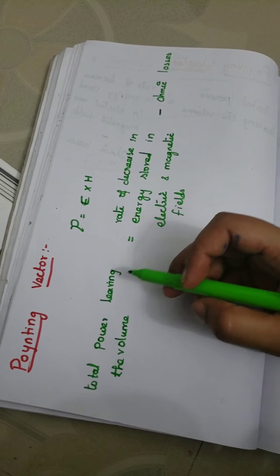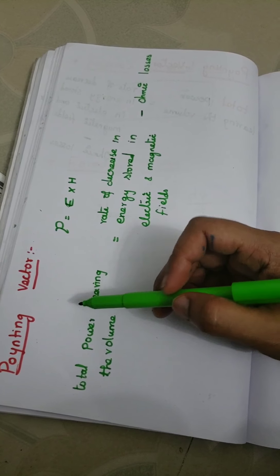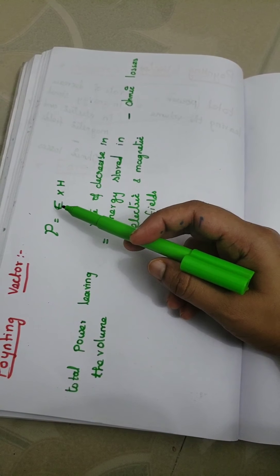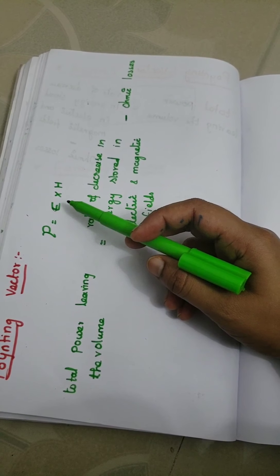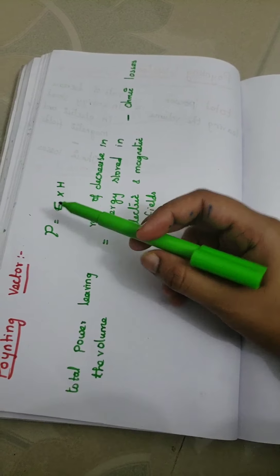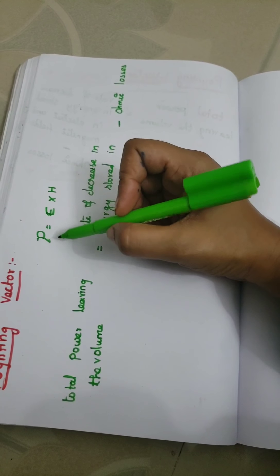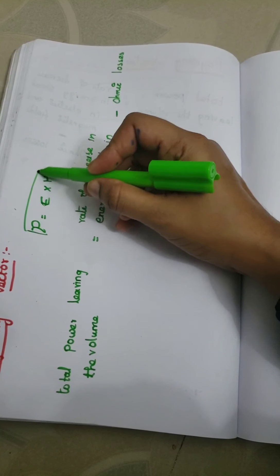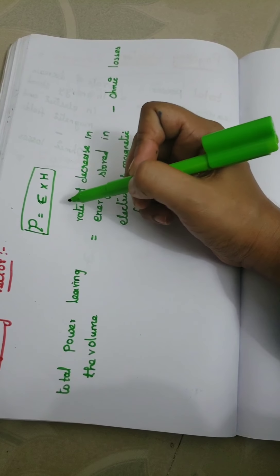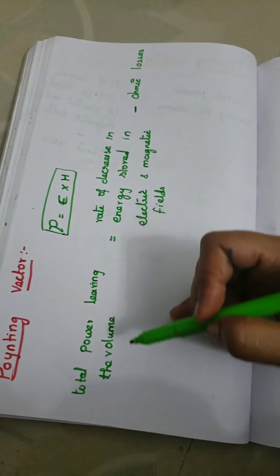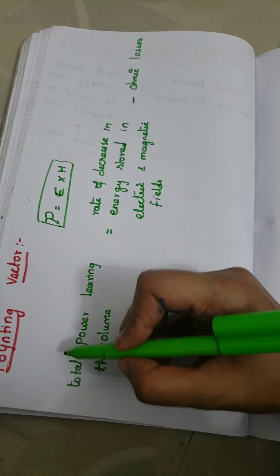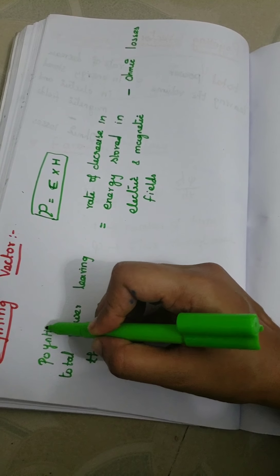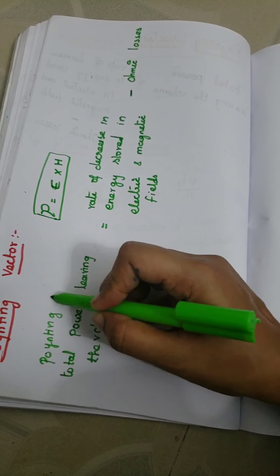Next we will see about the Poynting vector. The Poynting vector is the cross product of electric field intensity E and magnetic field intensity H. This is known as the Poynting vector, and the related energy theorem is known as Poynting's theorem.